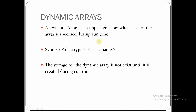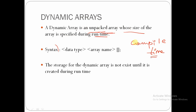A dynamic array is an unpacked array. We have discussed about unpacked arrays in our previous lectures. A dynamic array is an unpacked array whose size is specified during runtime. Normally, for regular arrays, the size is specified at compile time. But here, the size of the array is declared at runtime.